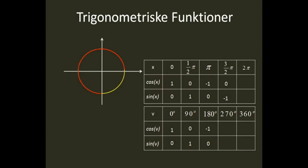Kosinus til 270 er lige med 0, og sinus til 270 er lige med minus 1. Kosinus til 2pi er lige med 1, og sinus til 2pi er lige med 0.